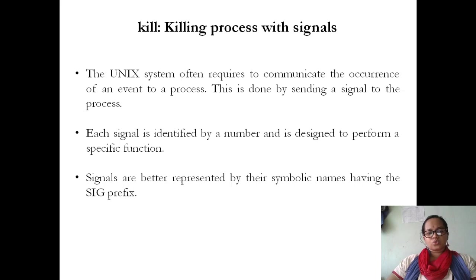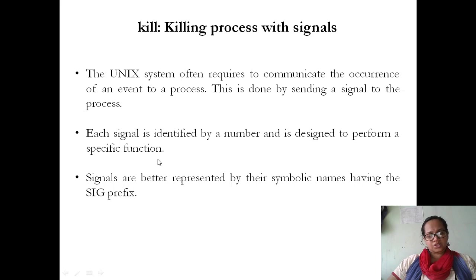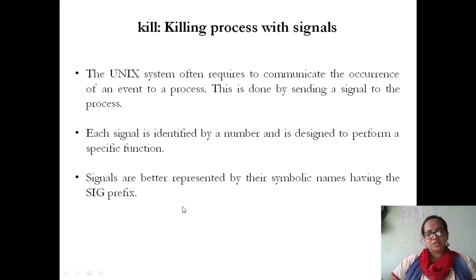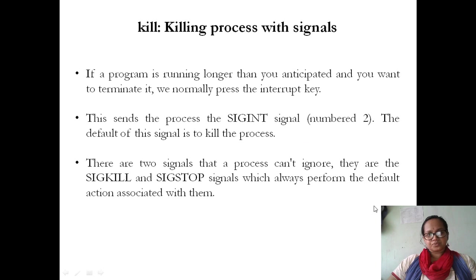Next is killing a process with signals. The Unix system requests communication of an event to a process by sending a signal. Each signal is identified by a number and designated to perform a specific function. Since the same signal number may represent different signals on different machines, signals are better represented by their symbolic names with the 'sig' prefix.